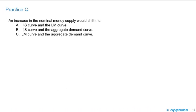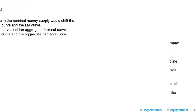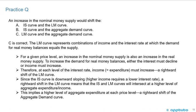Another quick practice question: an increase in the nominal money supply would shift — A, the IS curve and LM curve; B, the IS curve and the aggregate demand curve; or C, the LM curve and the aggregate demand curve? An increase in the nominal money supply is definitely going to shift the LM curve, so C is correct. The LM curve represents combinations of income and the interest rate at which the demand for real money balances equals the money supply.